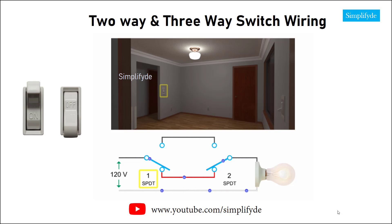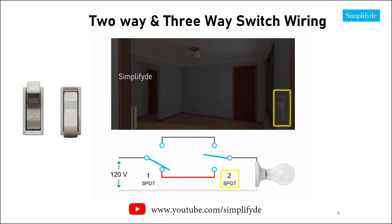Or, switch one can be down and switch two up, in which case the circuit is again broken, no current flows, and the light bulb is off.